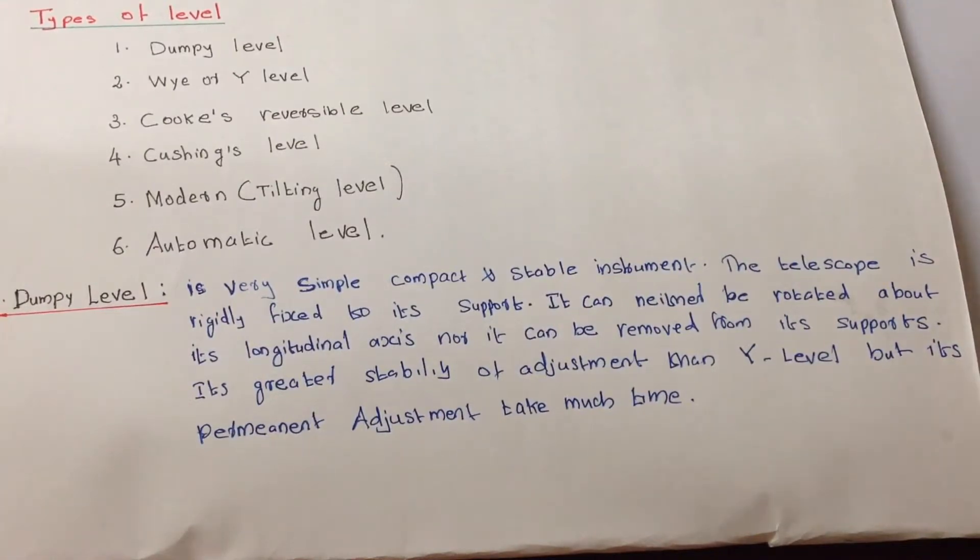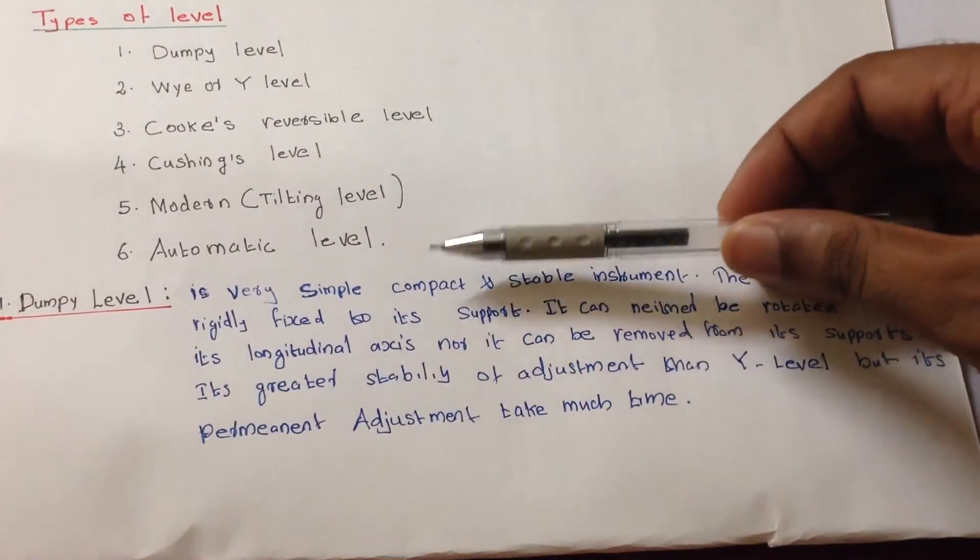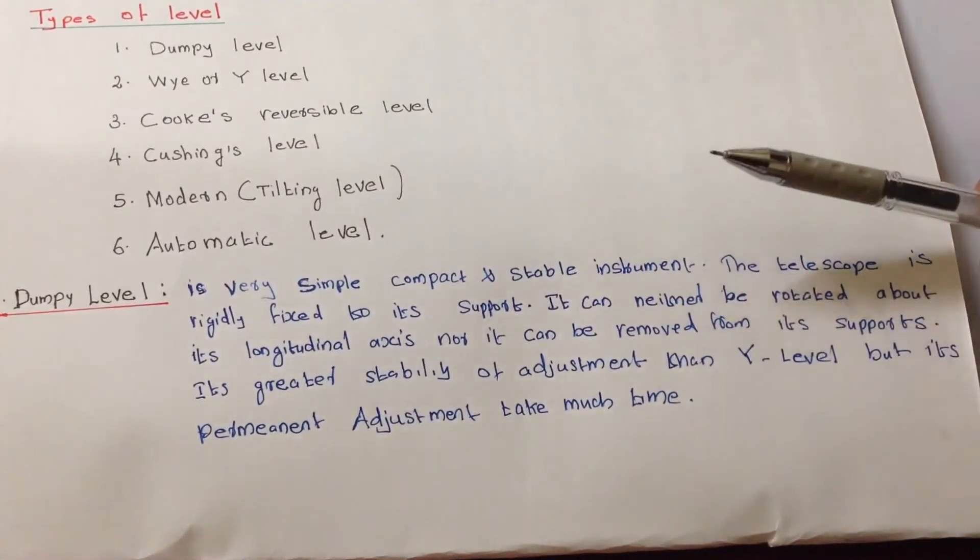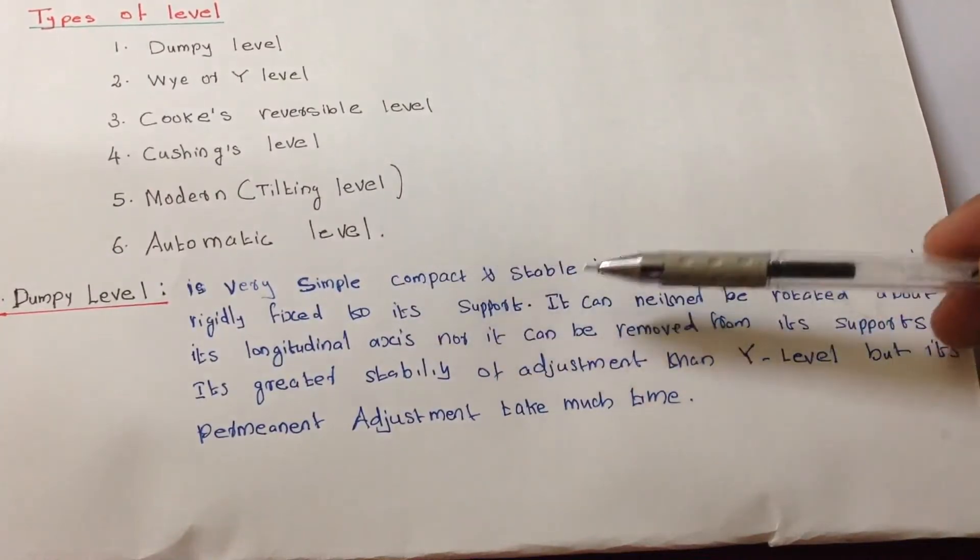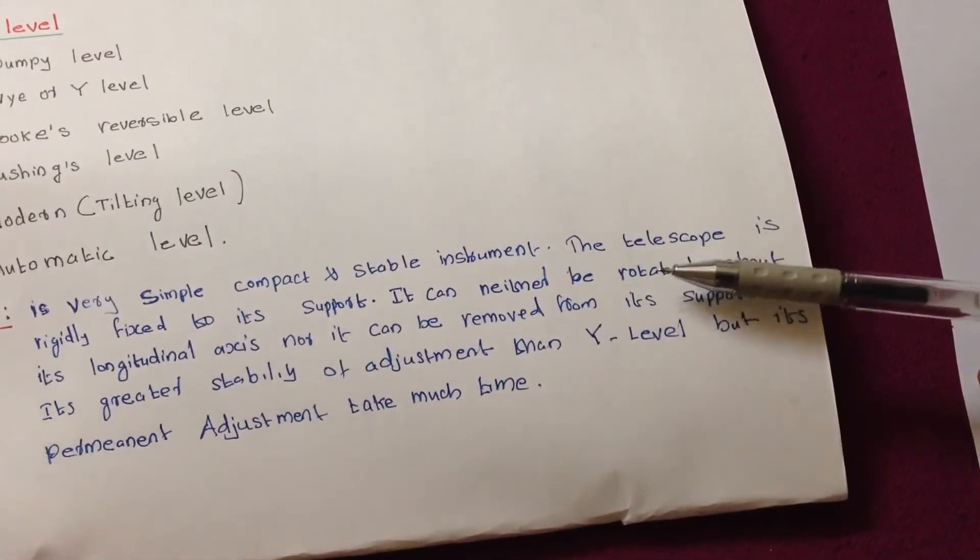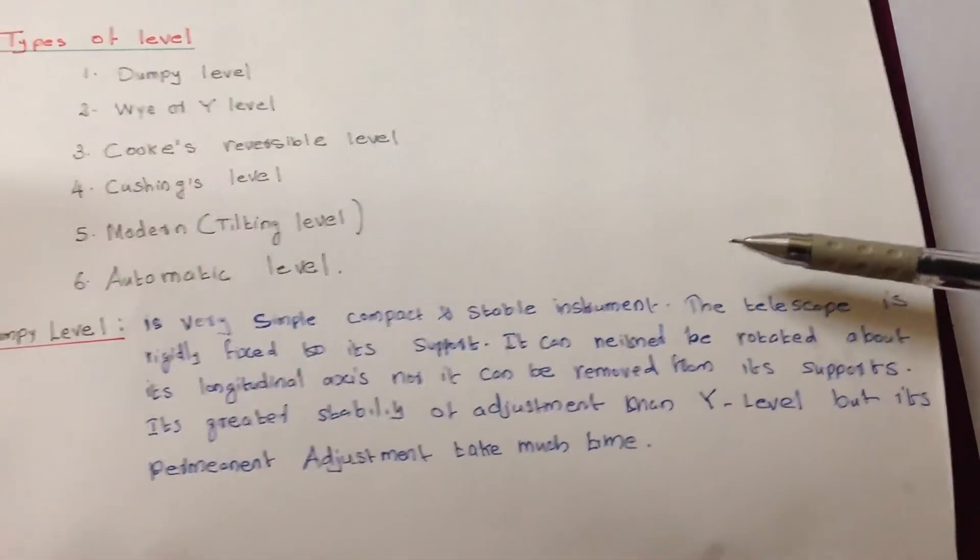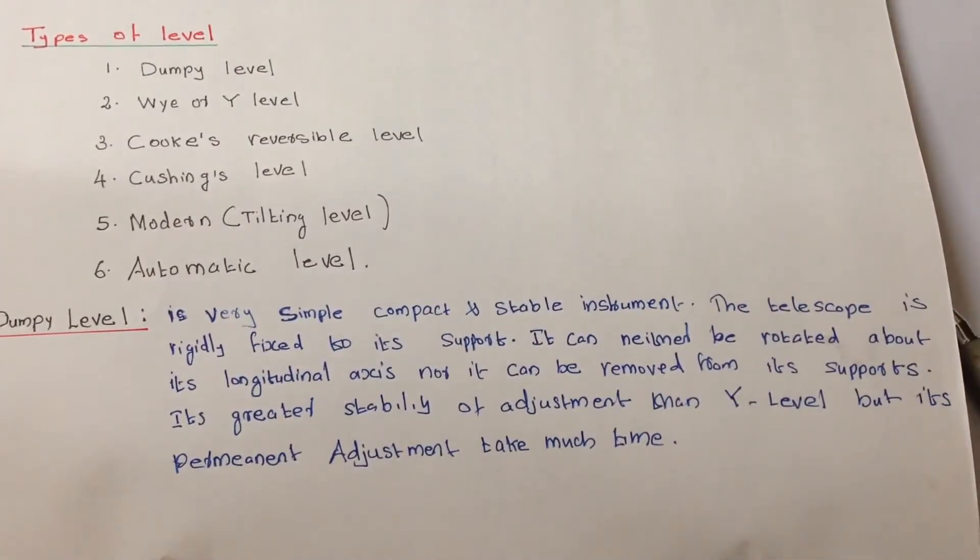First one we'll start with dumpy level. It's a very simple, compact and stable instrument. The telescope is rigidly fixed to its support. It can neither be rotated about its longitudinal axis nor can it be removed from its supports. It has greater stability of adjustment than Y level but its permanent adjustment takes much time.